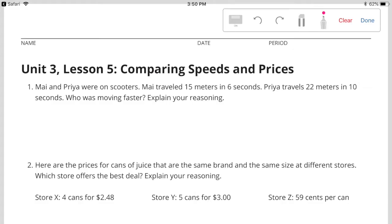Unit 3, Lesson 5: Comparing Speeds and Prices. Number 1: Mai and Priya were on scooters. Mai traveled 15 meters in 6 seconds. Priya travels 22 meters in 10 seconds. Who was moving faster? Explain your reasoning.